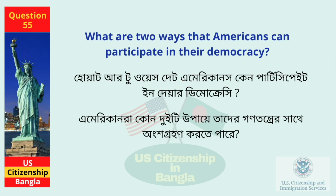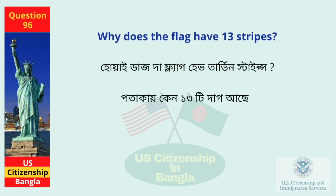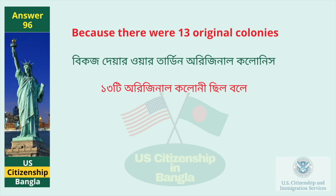What are two ways that Americans can participate in their democracy? Vote and join a political party. Why does the flag have 13 stripes? Because there were 13 original colonies.